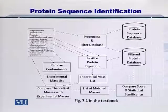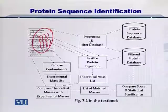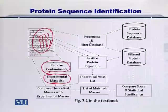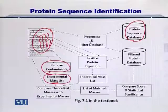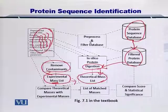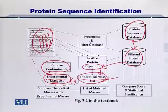This is the overview of the entire protein sequence search and identification process, shown here by a flow chart. The same steps that we just discussed are listed here. If you have a protein sample with several proteins, then you can remove the contaminants and obtain the experimental mass list. You can compare this mass list with the protein sequence database, which needs to be filtered first and digested to give you the theoretical mass list — this is also called the in silico mass.